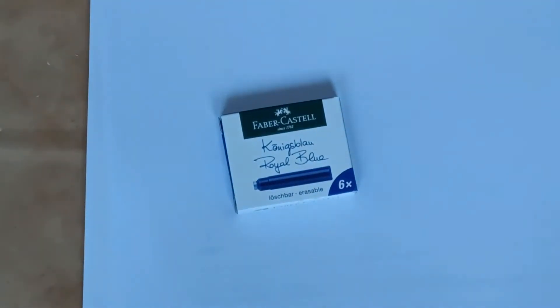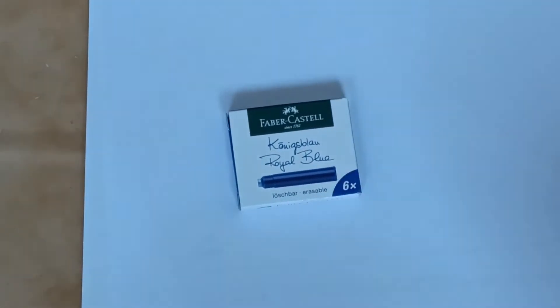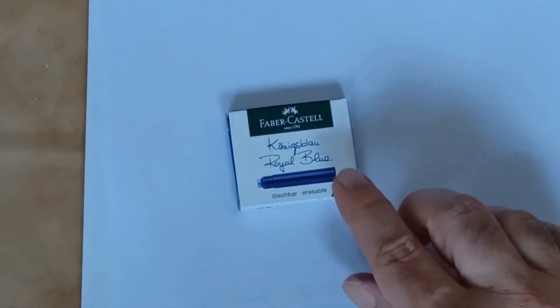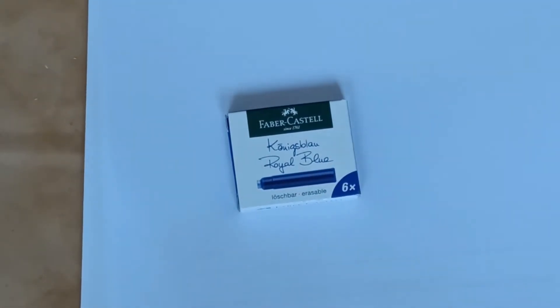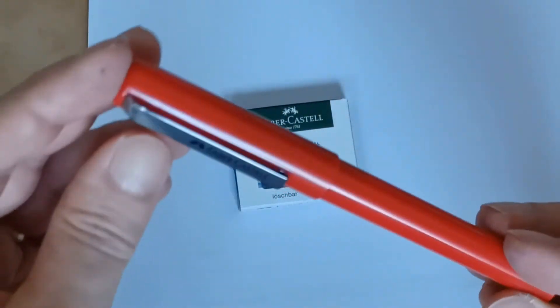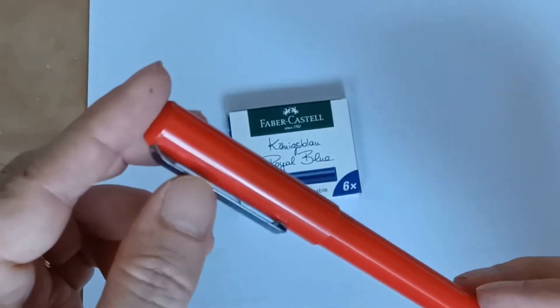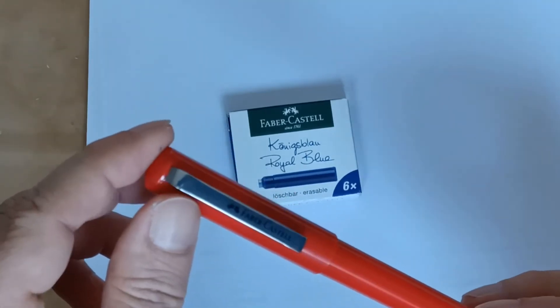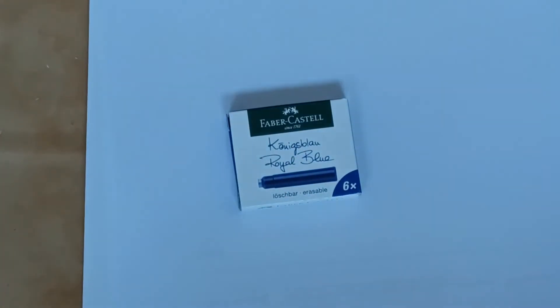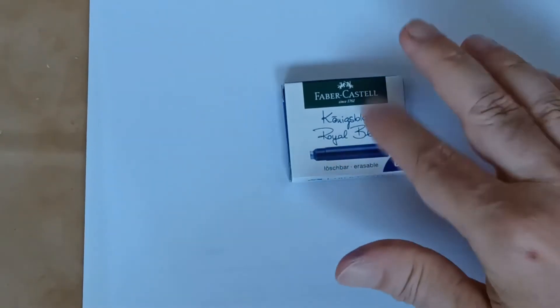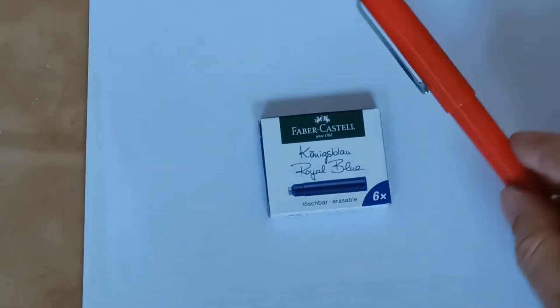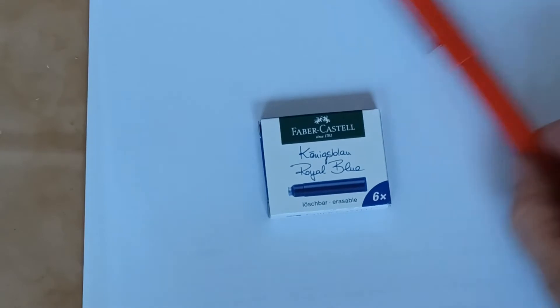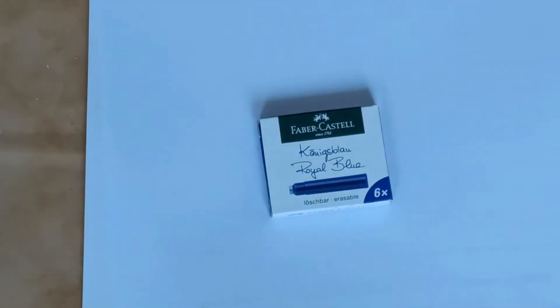Olá pessoal, tudo bem? Voltando para mais um vídeo, hoje é para um review de tinta. No último vídeo que publiquei no canal, eu falei sobre essa caneta que, por causa daquele defeitozinho que veio na grip section, eu consegui trocar ela na loja onde comprei e testei na hora. Mas não é o assunto de hoje. O assunto hoje é a tinta que vem na caixinha com essa caneta aqui - uma Faber-Castell Royal Blue.